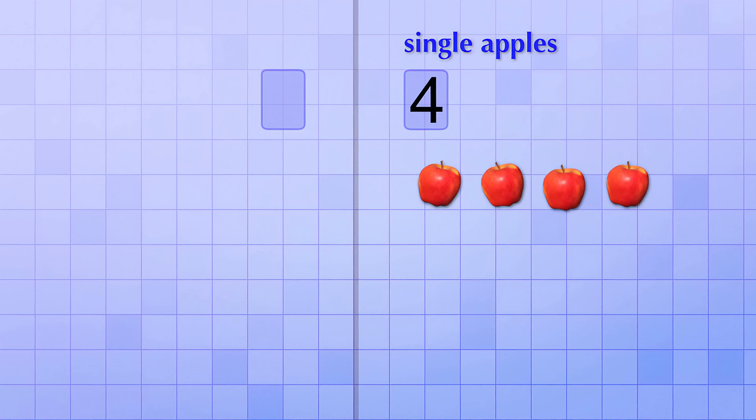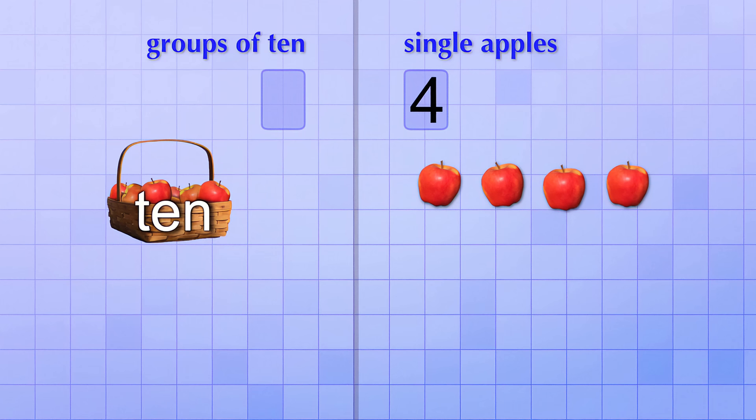Instead of using this new number place to count up individual apples one at a time, like we did with the first number place, we're going to use it to count apples 10 at a time. In other words, we'll use it to keep track of how many groups of 10 apples that we've picked.